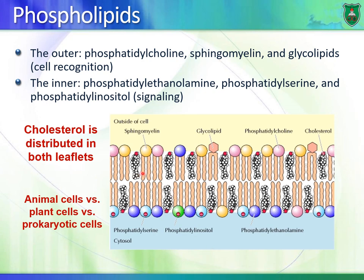Also seen in the plasma membrane is cholesterol, which is equally distributed on both leaflets. Cholesterol is present mainly in animal cells — there is no cholesterol in plant cells or prokaryotic cells. Plant cells have a different type of steroid molecule, and prokaryotic cells have none.